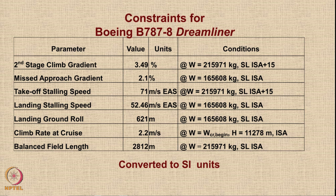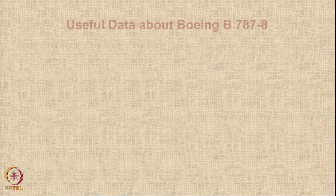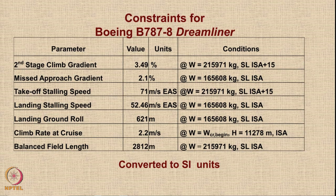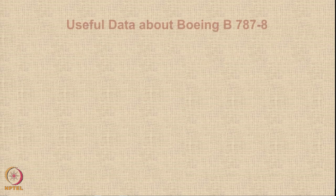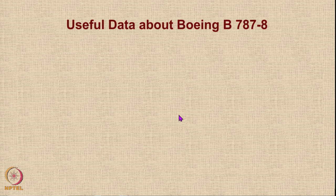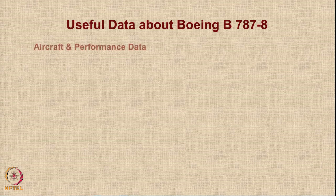It is important for you to note down these values as we will need them as we go ahead — we will show them before we do the calculations. Let us have a look at some useful data about Boeing 787. This data is either supplied as input or obtained through previous tutorials and calculations. Let us first look at the aircraft and performance data.